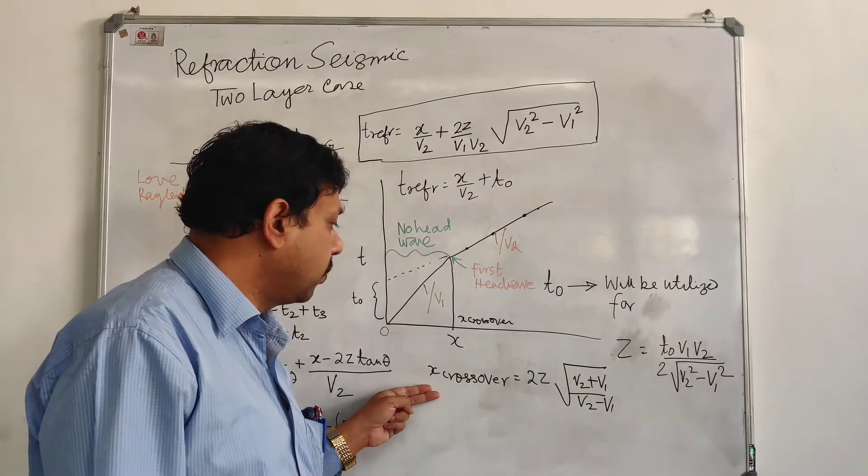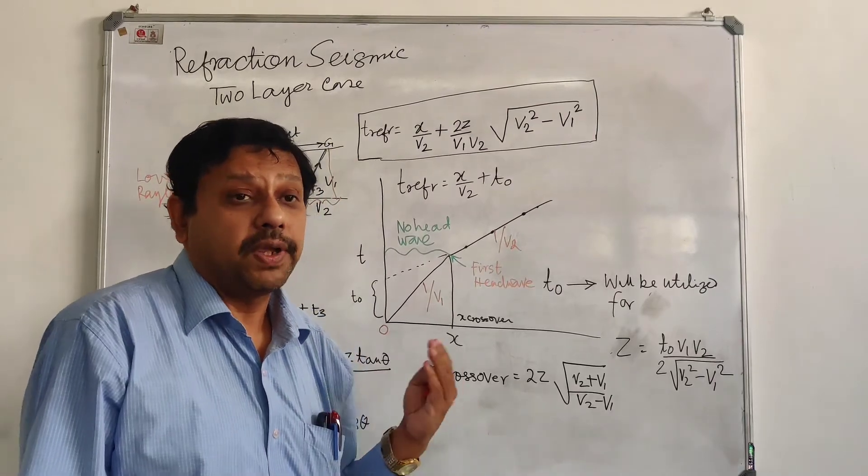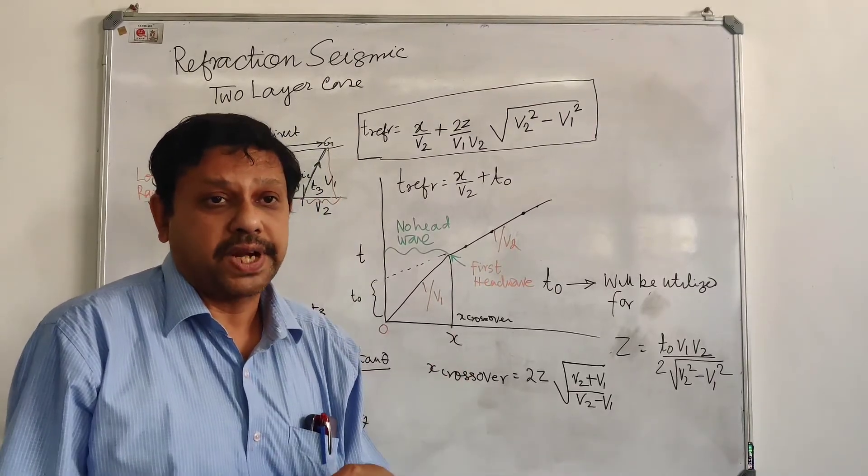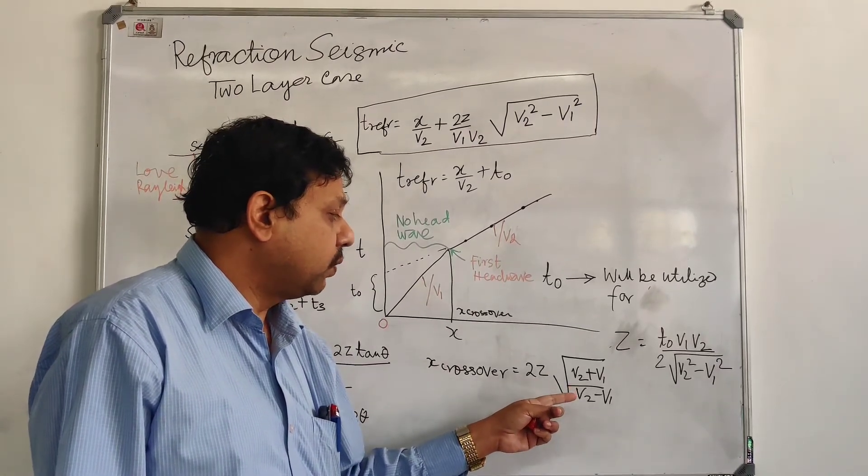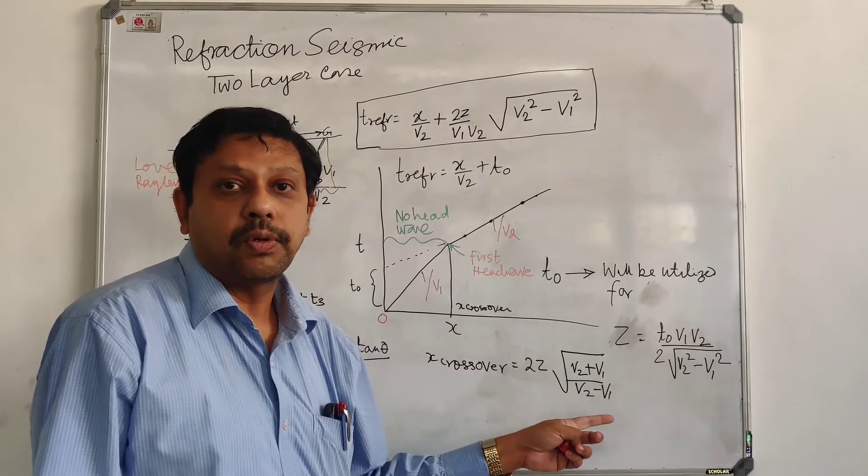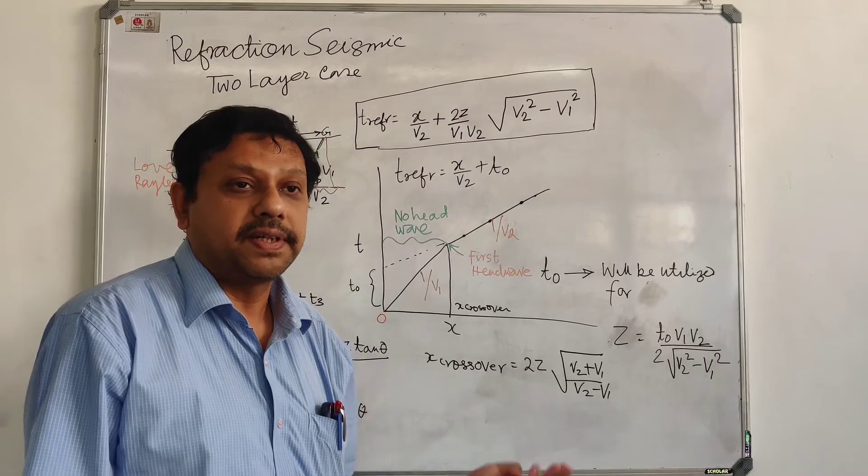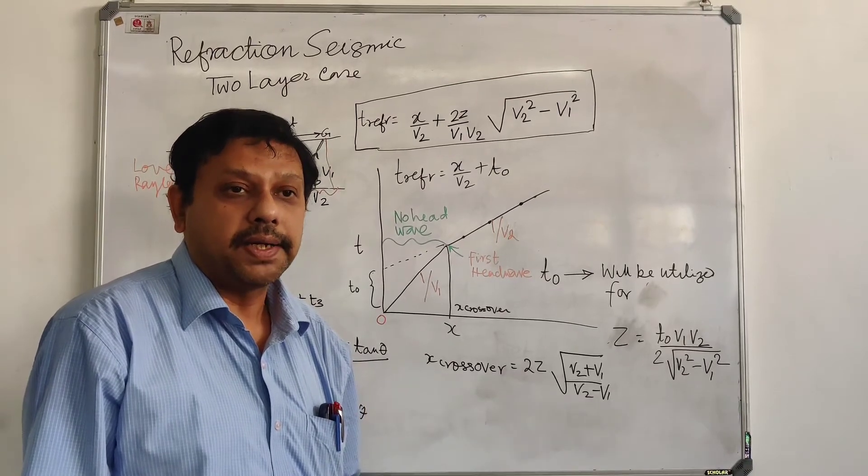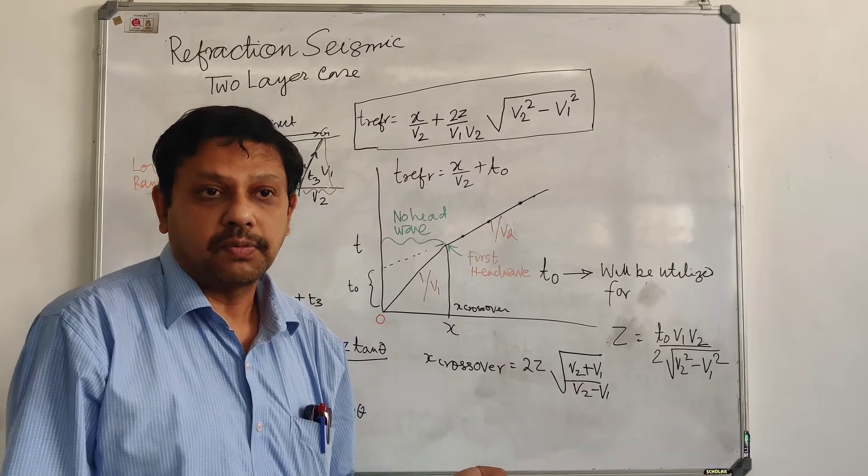And crossover from where the direct wave has been crossed by the refraction wave is given as 2Z times V2 plus V1 divided by V2 minus V1 square root. Please, please derive the same equation for a 3-layer case and a multi-layer case and see how the response is. Thank you very much.